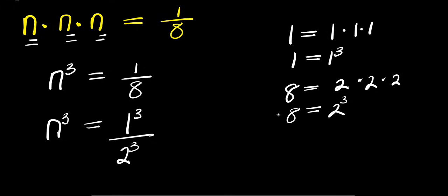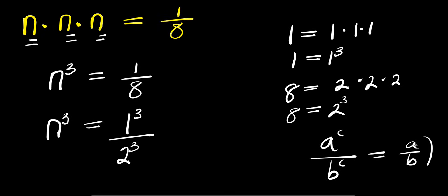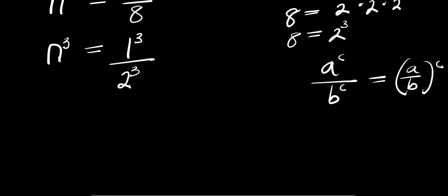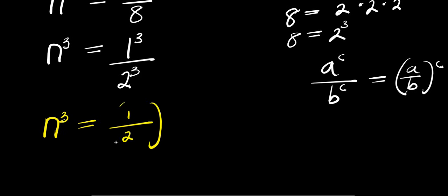Now, if you have a to the power c divided by b to the power c, this equals a divided by b to the power of c. So right now, n cubed equals 1 divided by 2, to the power of 3.